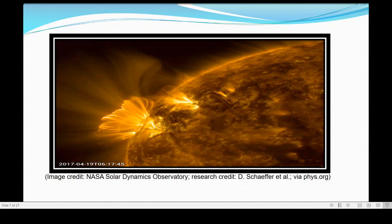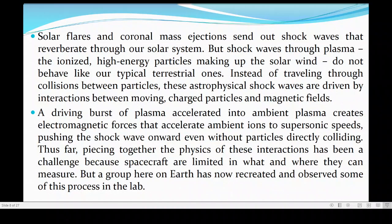Now, you see, in solar flares in the environment of the sun, there appears this kind of shockwaves. They emit shockwaves that reach the Earth. So, solar flares and coronal mass ejections send out shockwaves that reverberate through our solar system. But shockwaves through plasma, the ionized and high-energy particles making up the solar wind, do not behave like typical terrestrial ones. Instead of traveling through collisions between particles, these astrophysical shocks are driven by interactions between the moving charged particles and the magnetic fields of the sun and the planets nearby.